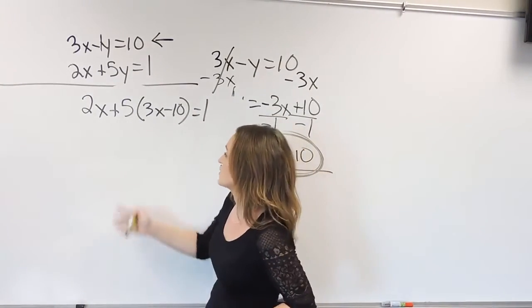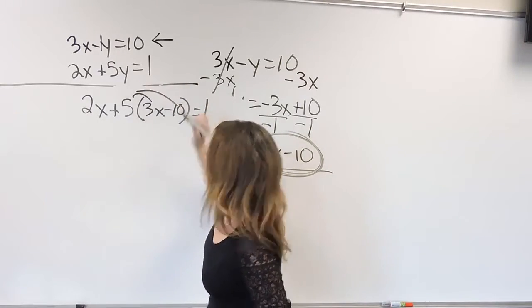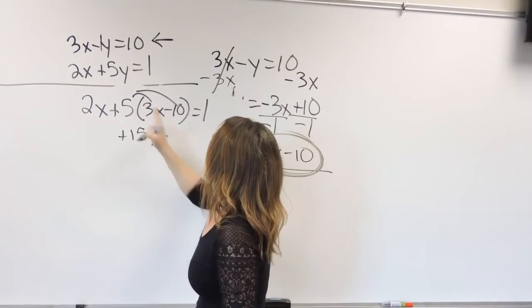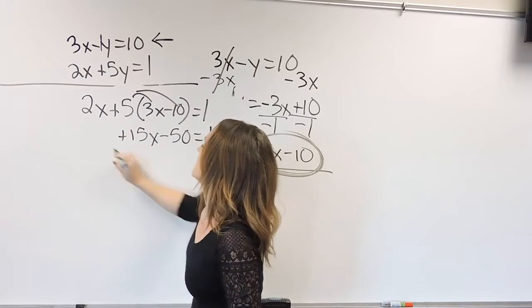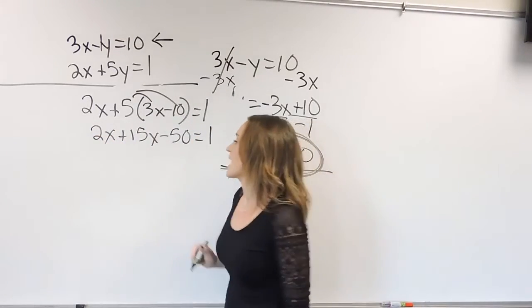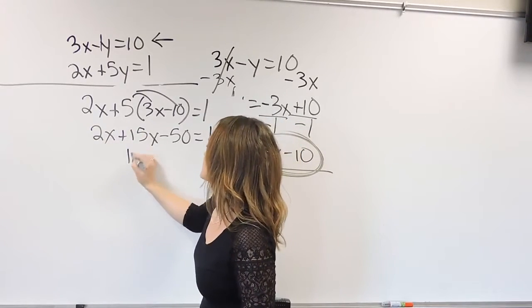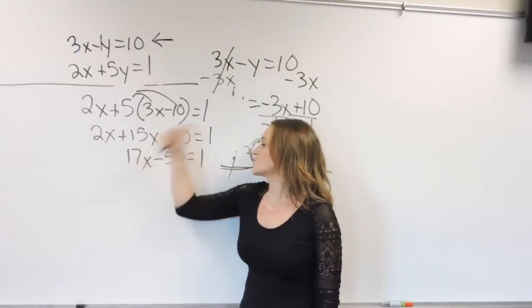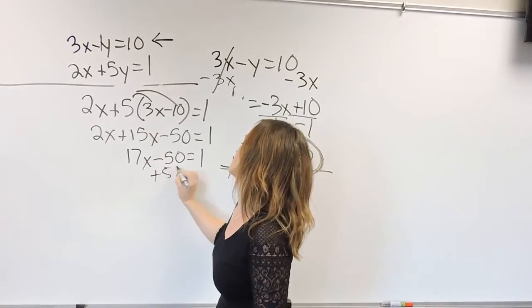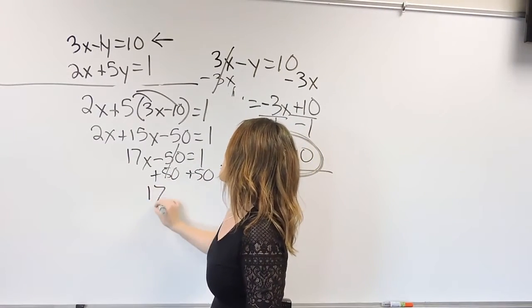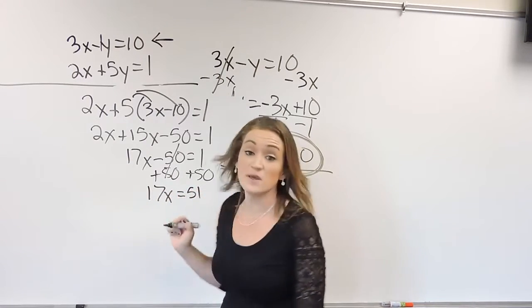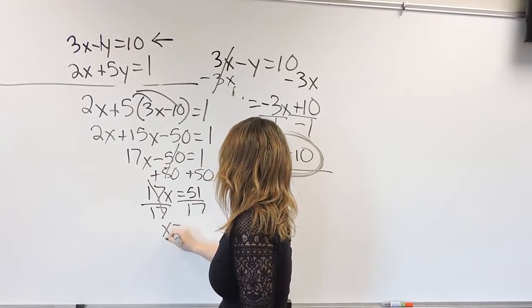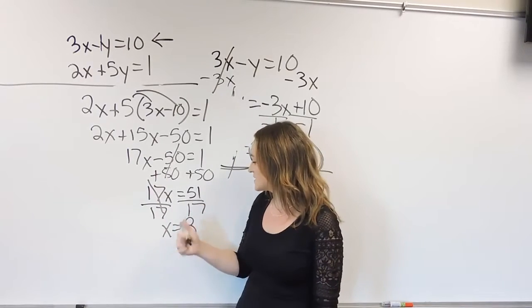So using our solving equation skills, we need to get rid of our parentheses first, so we're distributing the 5. 5 times 3x is 15x minus 5 times 10 is 50. Drop everything else down. Combine like terms. 2x plus 15x is 17x minus 50 is equal to 1. Move that 50 over to the other side, so plus 50 on both sides. That's going to cancel, leaving us with 17x is equal to 51, and when we divide out the coefficient here, so if we divide both sides by 17, we get that x is equal to 3.